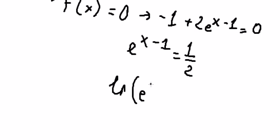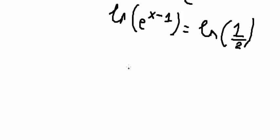So e to the power of x minus 1 equals 1 over 2. So you get x minus 1 equals ln of 1 over 2. We put negative 1 go to the right.